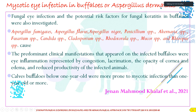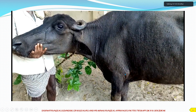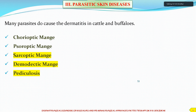Mycotic eye infection or aspergillosis in buffaloes is caused by Aspergillus fumigatus, A. flavus, A. niger, and Candida species. The predominant clinical manifestations spread from infected buffaloes to others. Buffalo calves below one year old were more prone to mycotic infection than older animals, as reported by Janan Mehamul Kalaf in 2021.